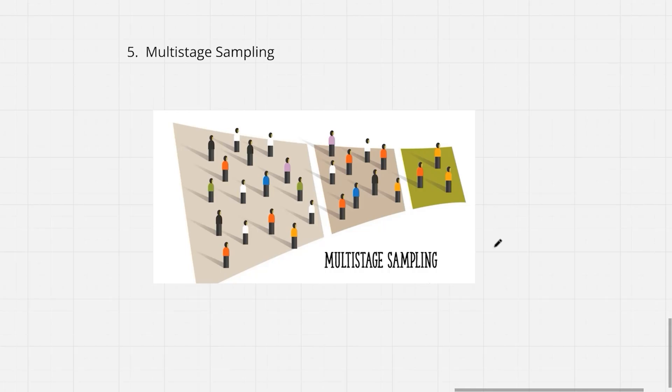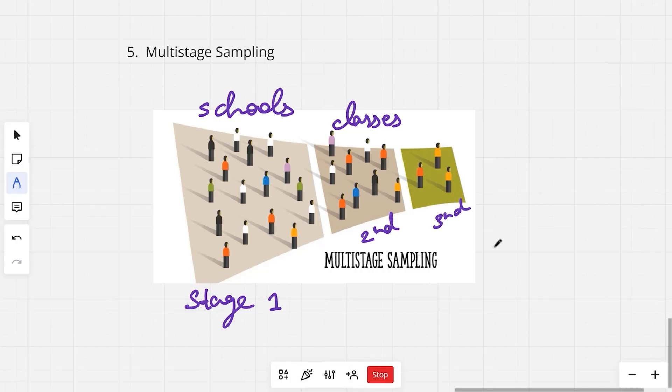Say for example, you want to survey students in all the schools in your city. The first stage would be, you randomly pick a few schools from the city. Once you have randomly picked your schools, you move on to the second stage. From these selected schools, we are going to randomly pick a few classes. Say for example, I decide to only consider my higher secondary classes that is fifth, sixth, maybe exclude the seventh grade and I go for eighth and ninth. Then I move to my third stage. From these classes, we are going to randomly choose a few students to survey. This is basically what multi-stage sampling looks like.